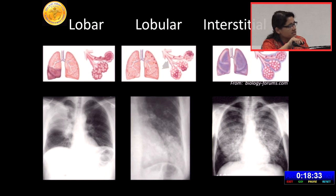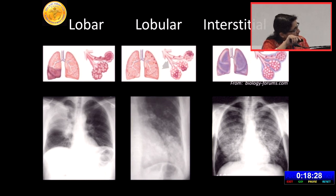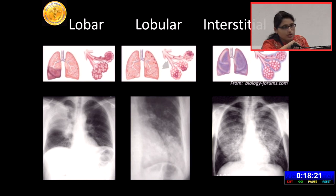When the disease progresses, the opacities tend to coalesce and become confluent. You can see some confluent opacities in the lower zone, but in the middle zone some discrete opacities remain. This is lobular bronchopneumonia.